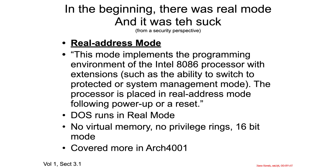As that finite state machine showed, if you reset your processor, it goes back into real mode. So everything always starts in real mode every time you power on the processor. That's why it's usually the job of the BIOS to get you out of real mode as soon as possible and into the more functional, featureful protected mode. We're not going to cover real mode much in this class — that's covered in Architecture 4001, the BIOS class.